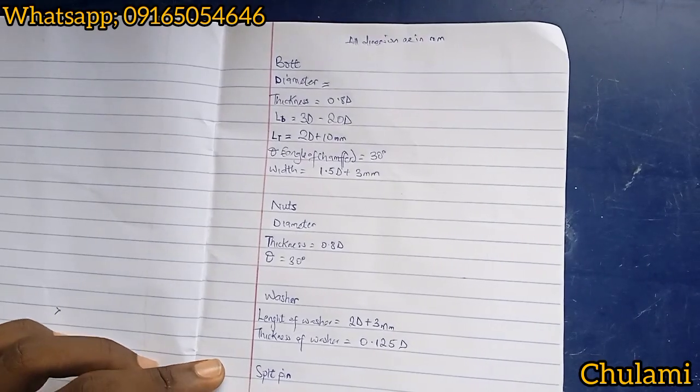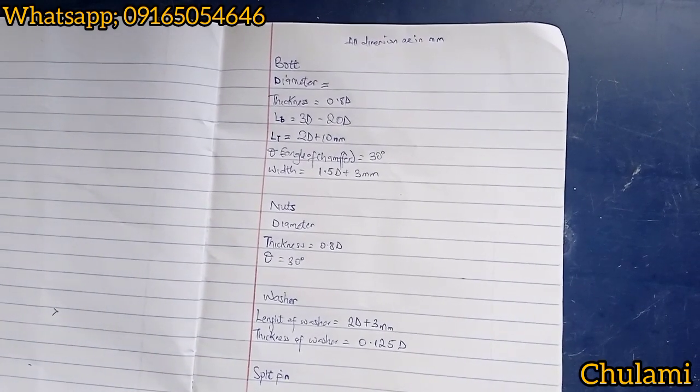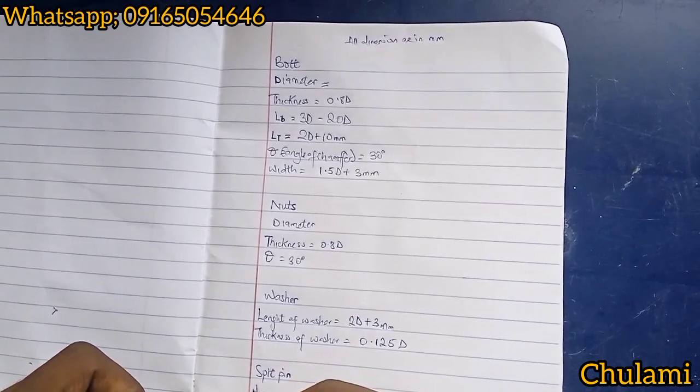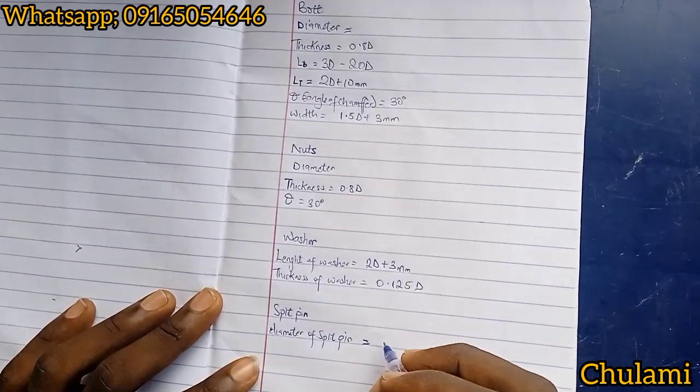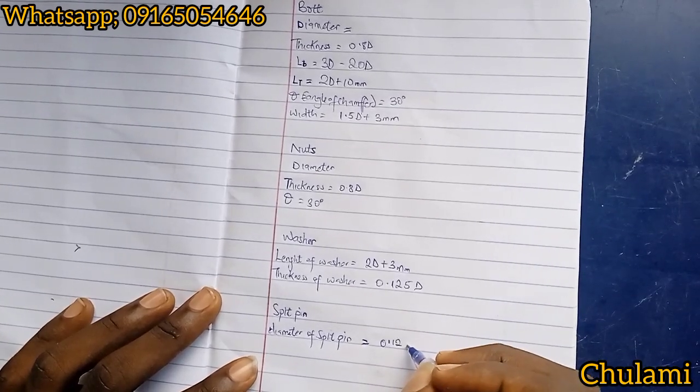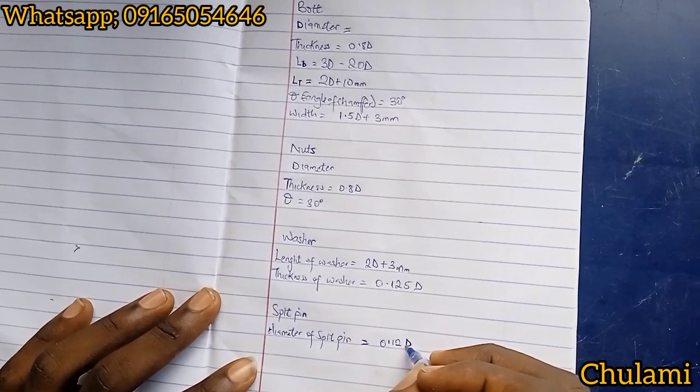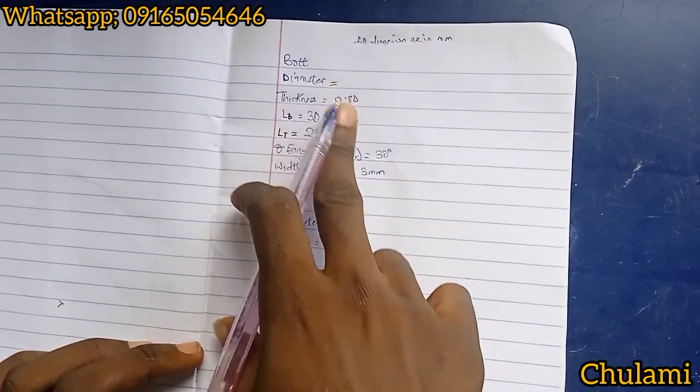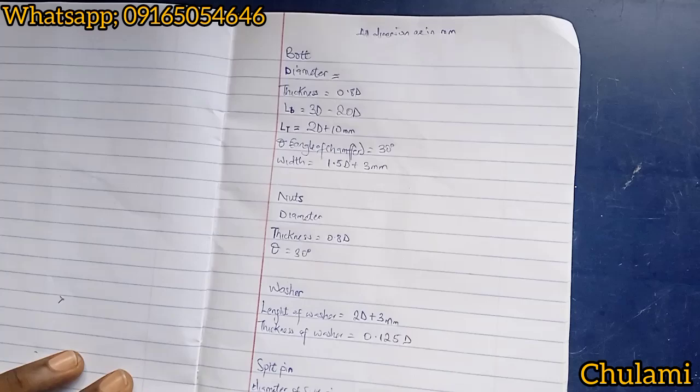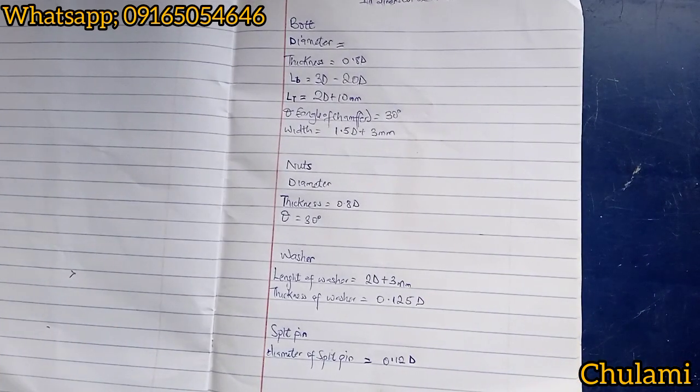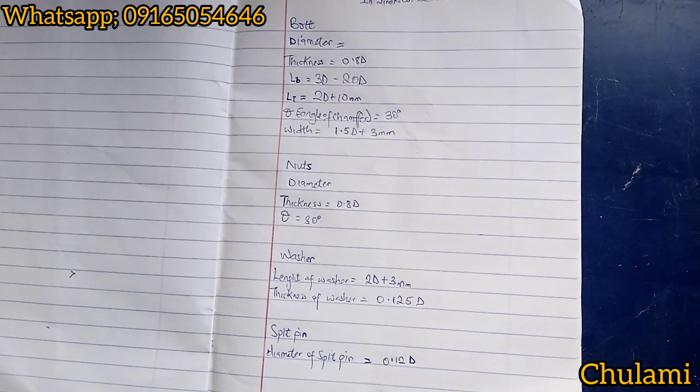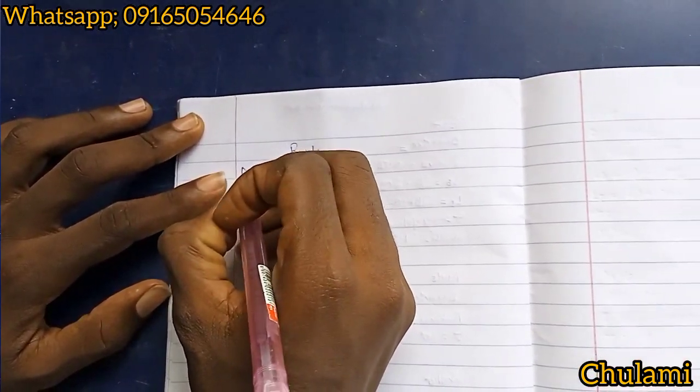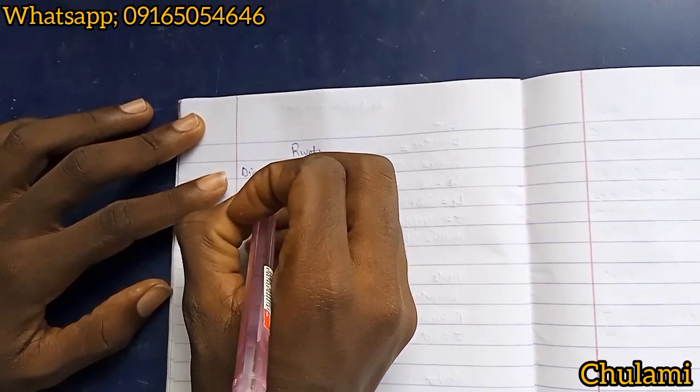All right, so for our split pin, we just need one parameter which is the diameter of the bolt. So guys, this is basically all the formulas you need in calculating bolts and nuts, washer, split pin assembly diagram.